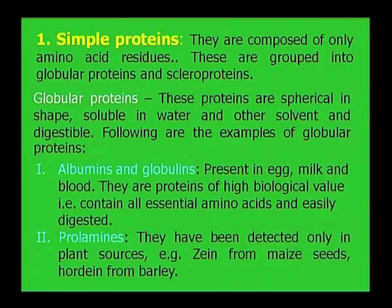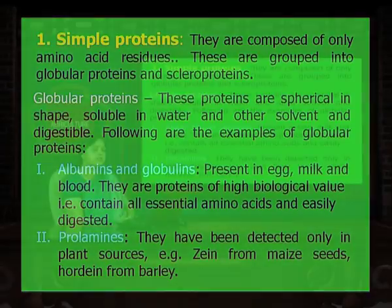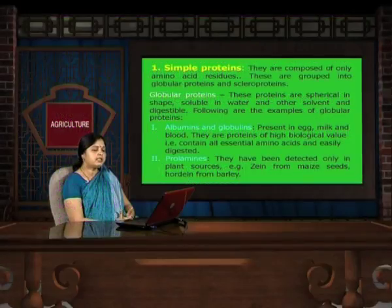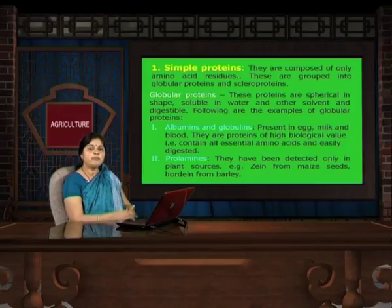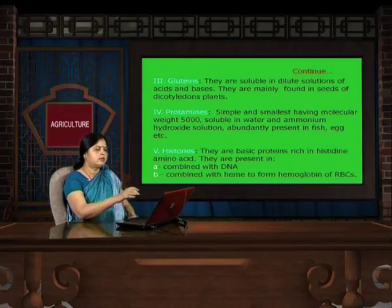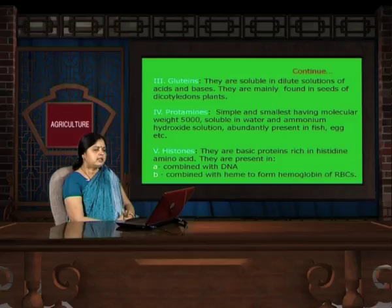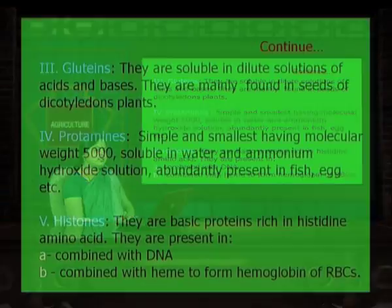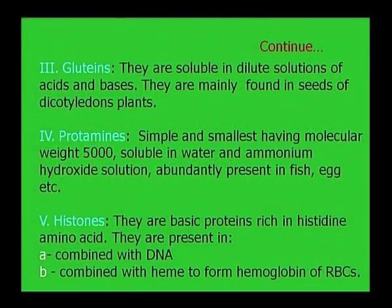Second, prolamins. They are storage proteins and have been detected only in plant sources; for example, zein from maize seeds and hordein from barley. Another is glutelins. They are also storage proteins, soluble in dilute solution of acids and bases, and mainly found in seeds of dicotyledon plants.